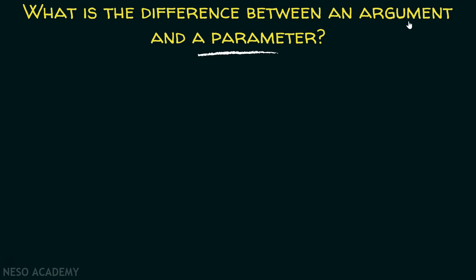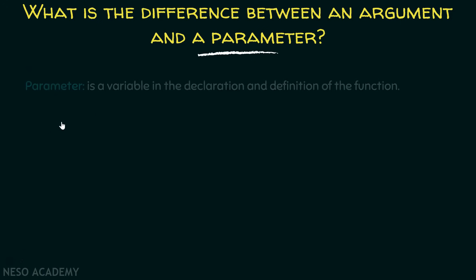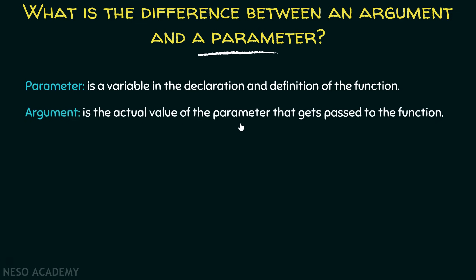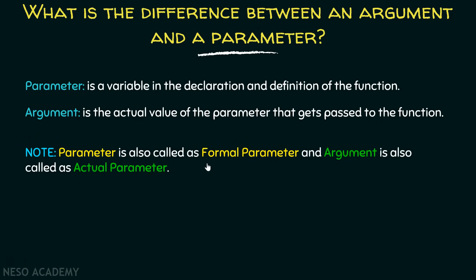Now let's get back to our presentation and try to understand what is the difference between an argument and a parameter. We are using these terms interchangeably, so it is important to understand the difference. A parameter is a variable in the declaration and definition of the function. An argument is the actual value of the parameter that gets passed to the function. Note that a parameter is also called a formal parameter, and an argument is also called an actual parameter.